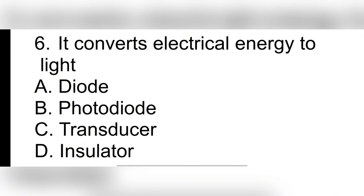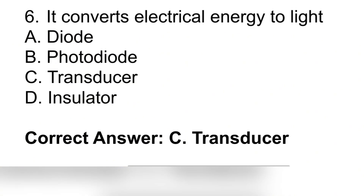Question 6. It converts electrical energy to light. A. Diode. B. Photodiode. C. Transducer. D. Insulator. Correct answer: C. Transducer.